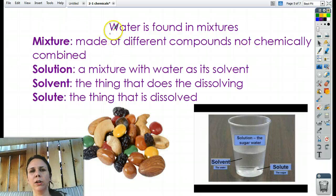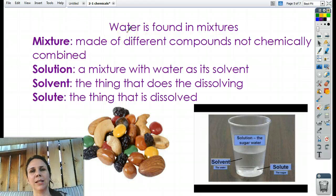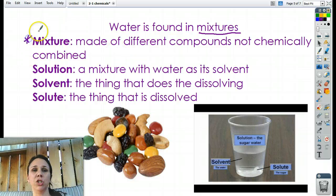Next. Now, water is usually, well, we drink it when it's by itself, but water is, like I said, a solvent for lots of different things. So, water has lots of different things mixed in it. Water is usually found in mixtures. The fancy word or definition for a mixture is anything that's made up of different compounds, not chemically combined.